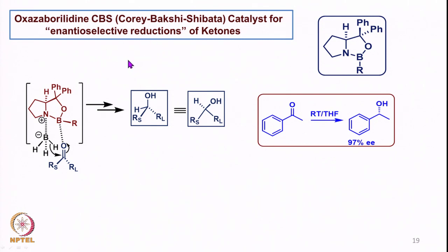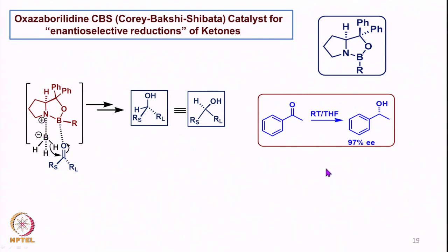Then in asymmetric reduction studies, we looked at the utility of the Corey-Bakshi-Shibata (CBS) catalyst for the reduction of ketones to alcohols in a highly enantioselective and predictable fashion. We invoked the transition state where this chiral catalyst allows the reducing agent — BH3 or any borane — to attach and allow highly enantioselective reduction.